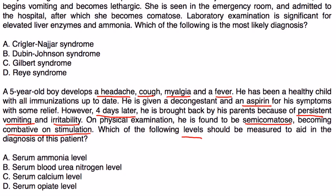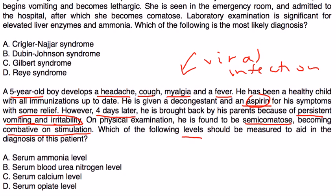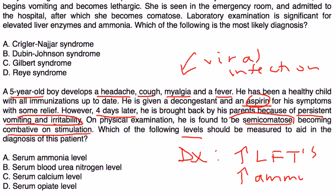Again, a very similar scenario: a child develops what is likely a viral infection, is given aspirin, then develops mental status changes and goes into a coma. To diagnose it, liver function tests would be one thing that comes to mind, and ammonia would be another — and that is in the answer choices.